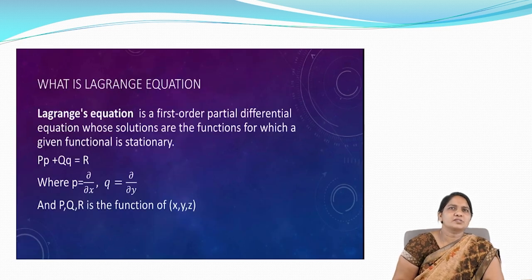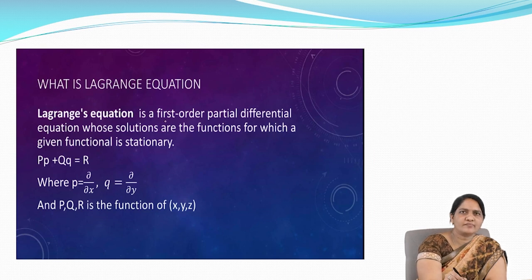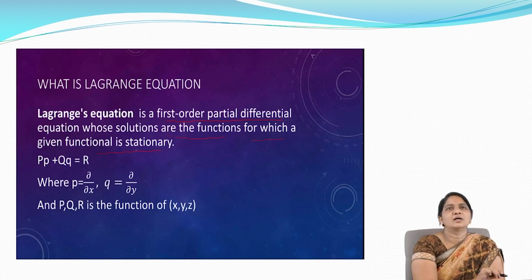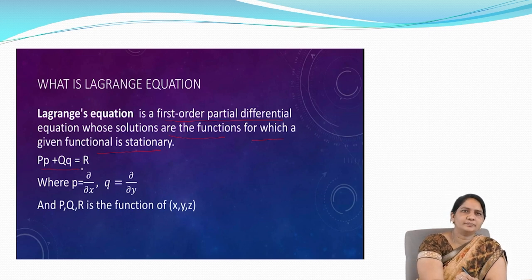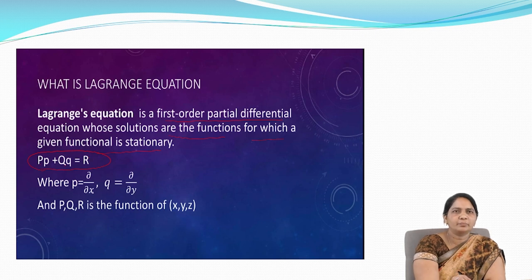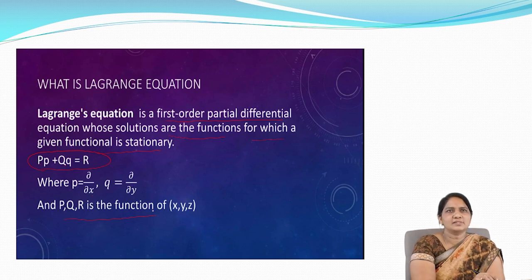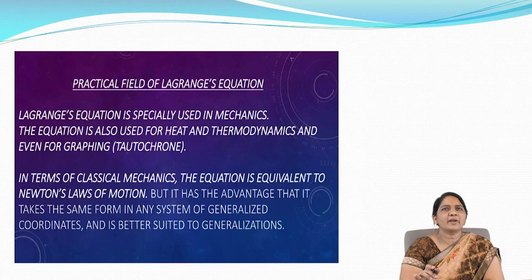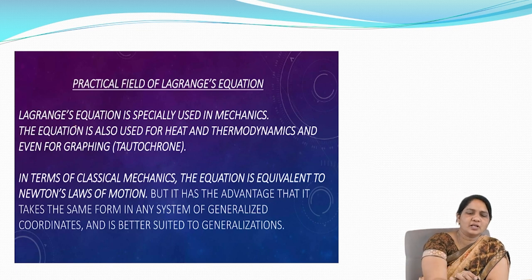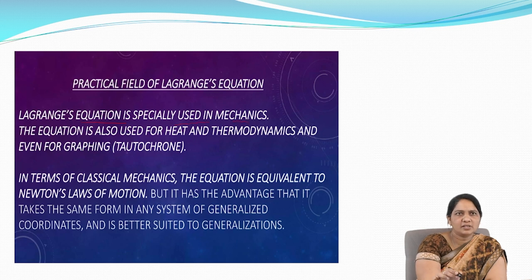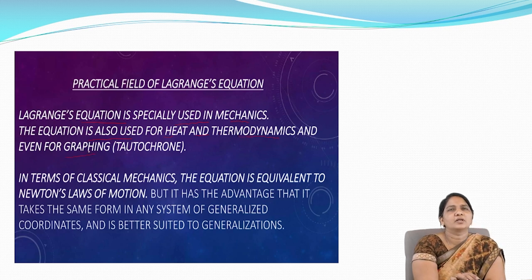Lagrange's equation is a first order partial differential equation whose solutions are functions of which a given functional is stationary. The equation form is P·p + Q·q = R, where small p is ∂z/∂x and small q is ∂z/∂y, and P, Q, R are functions of x, y, z. Lagrange's equation is specially used in mechanics, heat, thermodynamics, and graphing.